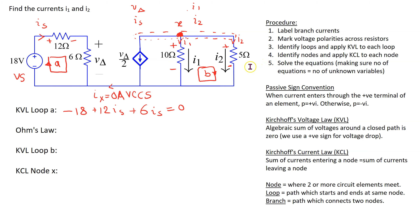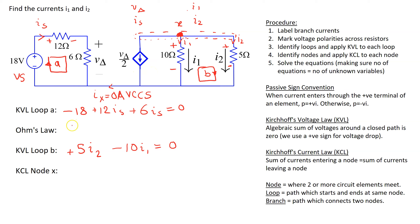Going from plus to minus across the 5 ohm resistor is a voltage drop, giving +5·i2. Then going from minus to plus is a voltage rise, so we get −10·i1 = 0. Next, let's apply Ohm's law to the 6 ohm resistor. The voltage drop across this resistor is the parameter v_delta, which controls the magnitude of the dependent source. So we have v_delta = 6·i_s.